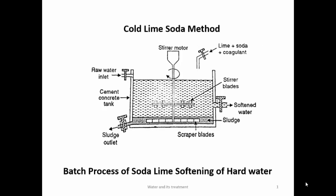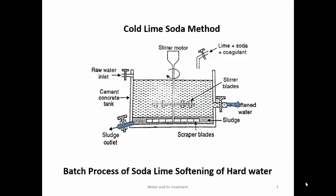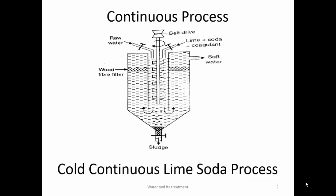In the lime-soda method there are two variants: cold lime-soda method and hot lime-soda method. In the cold lime-soda batch process, raw water is added from one inlet and lime, soda, and coagulant are added from another. The coagulant gathers the precipitate and settles it to the bottom. A stirrer motor mixes the contents. After reaction, the precipitate is removed as sludge from the bottom outlet, and softened water is removed through a filter bed. Two cement concrete tanks are constructed side by side and used alternatively. Residual hardness is around 30–50 ppm. The major drawback is that batch process is time consuming.